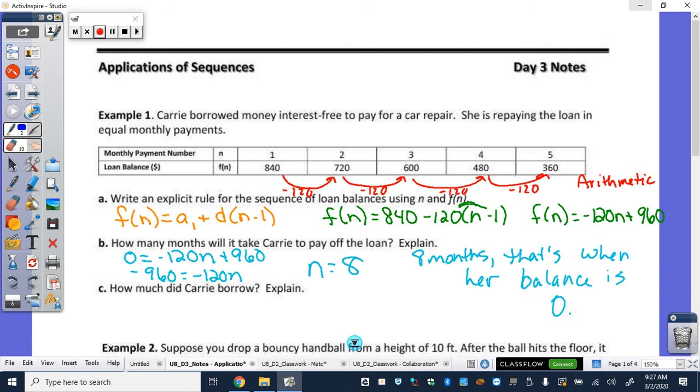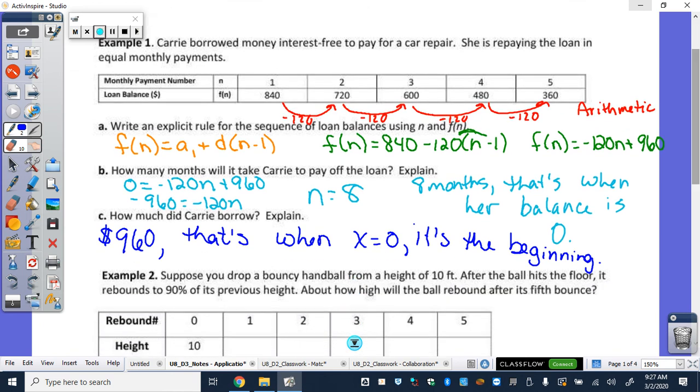So then see how much did she actually borrow. 960, how do we know it was 960? So that's when x is 0, which means it's the beginning of the problem. In this case, since it is a word problem, the beginning is when your time is 0. So you're still going to be looking for that value there at the beginning of time for that situation. Not like the beginning of time in general. So again, figure out what kind of sequence you're dealing with, use that formula, answer the questions that go along with it.